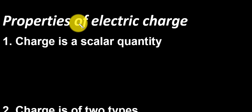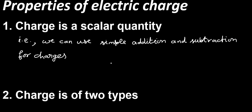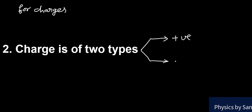Now, I will discuss the properties of electric charge. The first property is charge is a scalar quantity. That is, we can use simple addition and subtraction for charges. Second property is charge is of two types. One is positive and other is negative. We have already discussed the positive and negative charges.